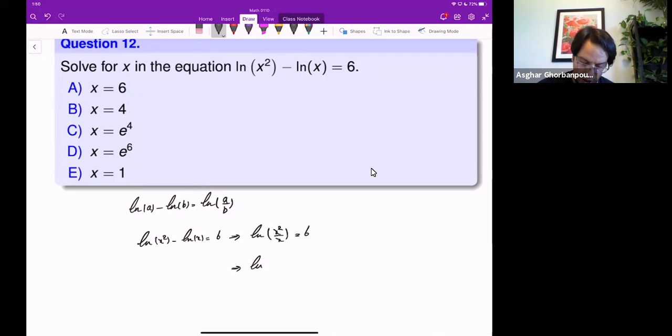And you see, ln of x squared over x is just x equals to 6.